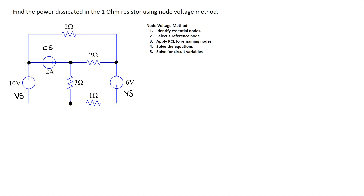Note that this point in the circuit is a node because two circuit elements are joining, but it is not an essential node. Step two is to select one of the essential nodes and make it a reference node. In this example, it is a good choice to make this node a reference node, and this is indicated by the ground symbol.